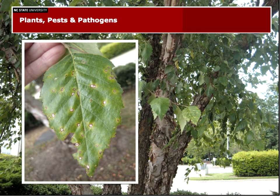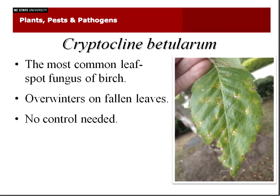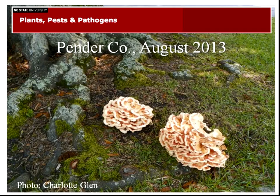Another very common leaf spot disease is this one on birch. It turned out to be a fungus called Cryptocline betularum — the most common of our leaf-spotting fungi on birch trees. This also overwinters in fallen leaves. Other than keeping those leaves raked up at the end of the year, there is really no control needed. It's a cosmetic problem. If you get asked about it, you can show off by saying, 'Why, I believe that must be Cryptocline betularum.'